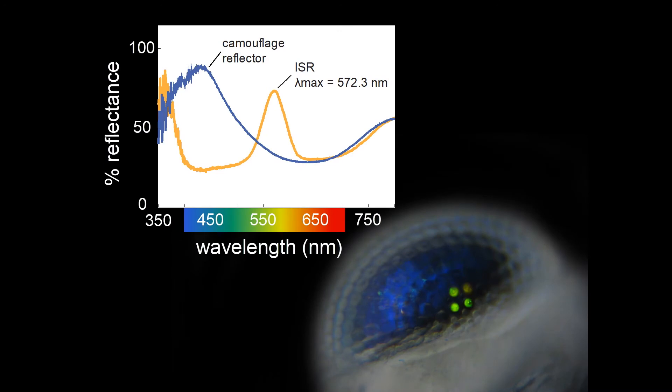Our spectral analysis revealed that the ISR reflects a band of wavelengths in the yellow region of the spectrum, while the camouflage reflector is a much broader curve that peaks in the blue.